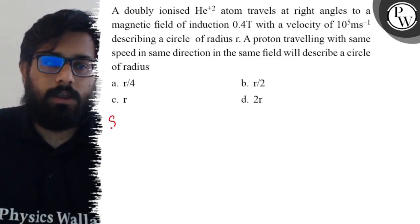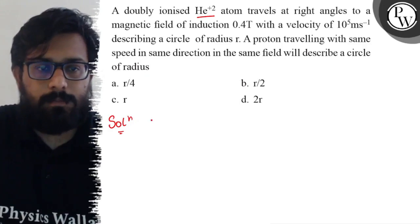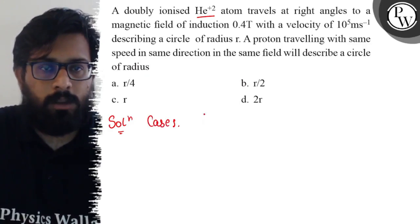So here in this question, let us solve this in two different cases. Consider first the helium atom. For the ionized helium atom, we know that the force acting on the charged particle is qvB, this is the magnetic force.